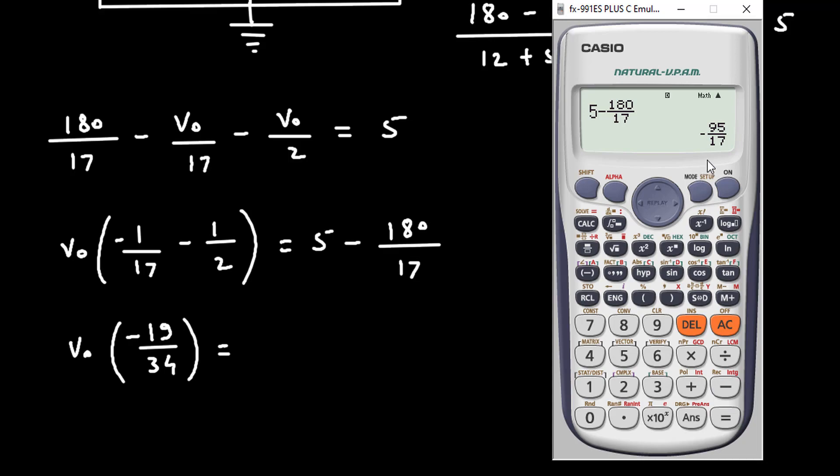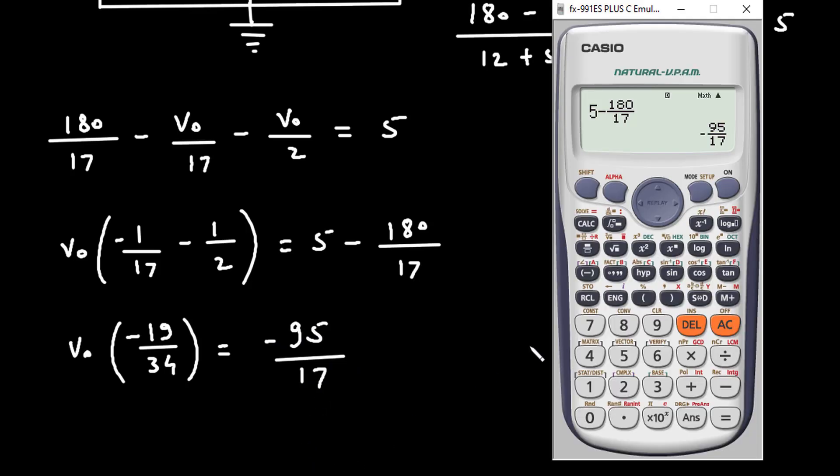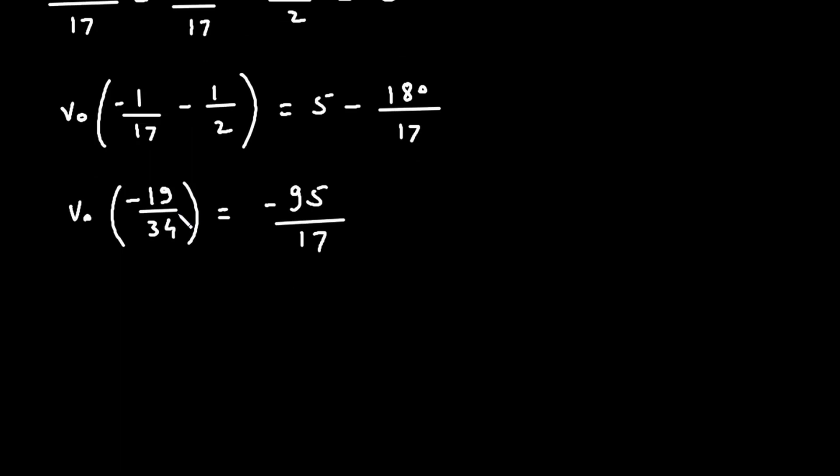So, it is minus 95 divided by 17. We can take this on right side. So, VO is equal to minus 95. This minus and this minus will get cancelled. So, only 95 divided by 17 multiplied with.